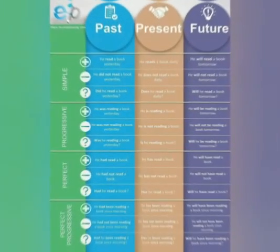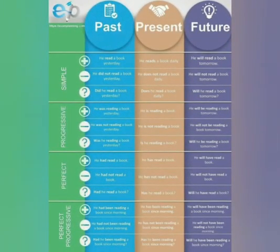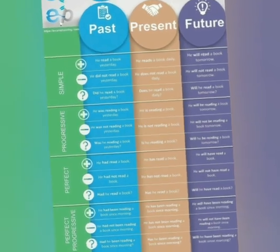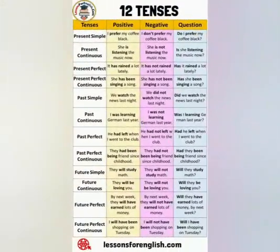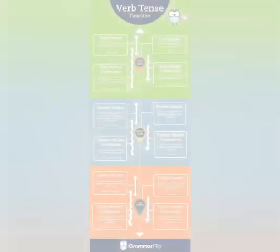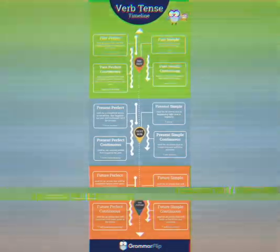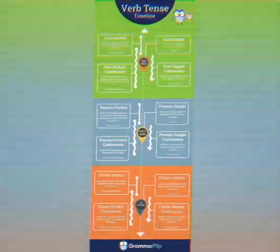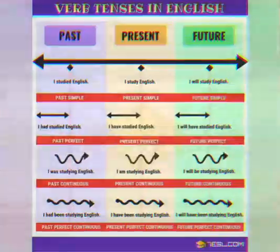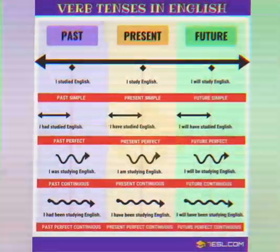Past tense is a form of verb which speaks about the incident which had already occurred in the past. There are four types of past tense: simple past, past continuous or past progressive, past perfect tense, and past perfect continuous tense.